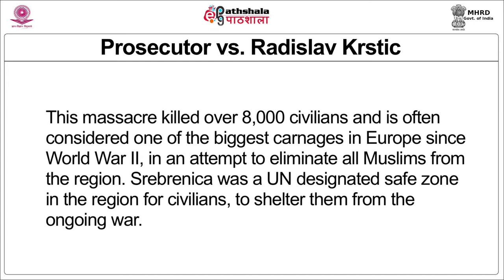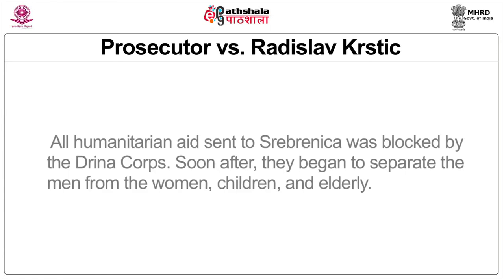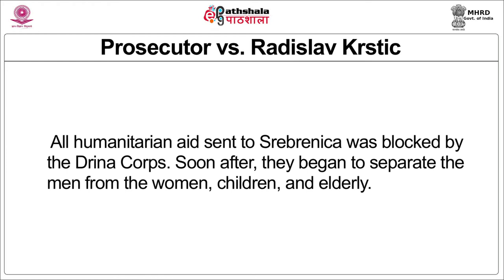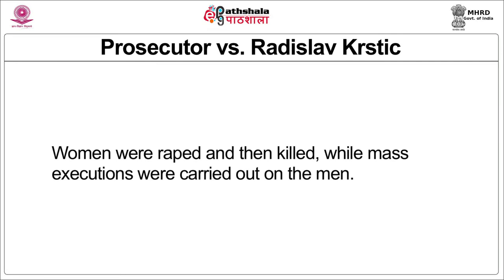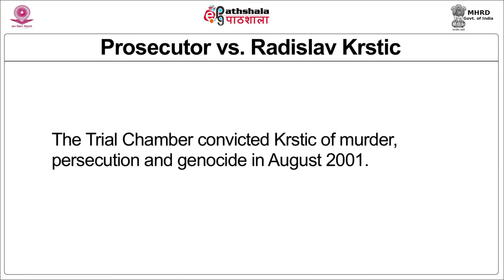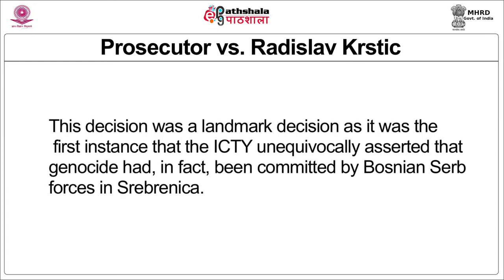In an attempt to eliminate all Muslims from the region, Srebrenica had been designated a UN safe zone to keep civilians sheltered from the ongoing war. The forces of Kristic under the Drina Corps blocked all humanitarian aid being sent to Srebrenica. Soon after, they began to separate the men from the women, children and elderly. Women were then raped and killed while mass executions were carried out of the men. In one morning alone, 8,000 Muslim men and boys were lined up against a wall and shot to death. The trial chamber convicted Kristic of murder, persecution and genocide in August 2001. This was the first instance that the ICTY unequivocally asserted that genocide had been committed by Bosnian Serb forces in Srebrenica.